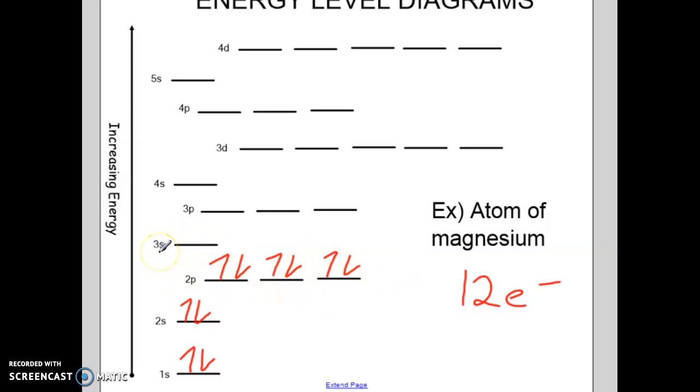So this is our full energy level diagram for an atom of magnesium. Now notice we have more energy levels that are here, 3p, 4s, 3d, etc. But we would not draw those if we were drawing this freehand.